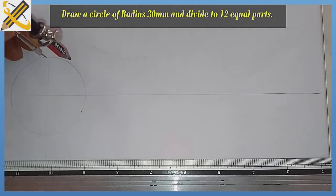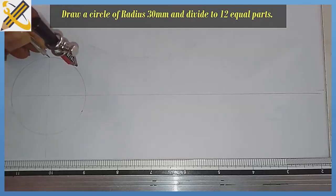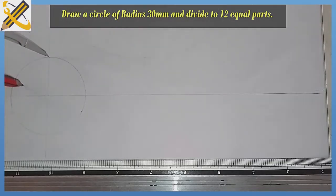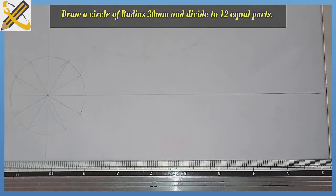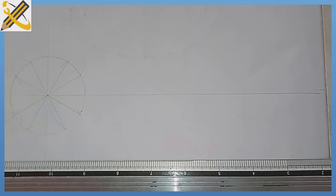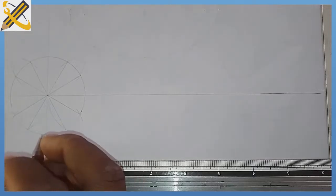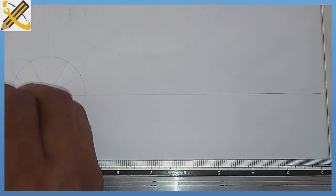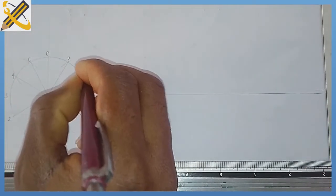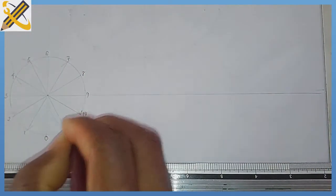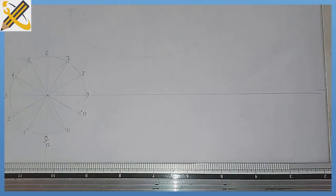After doing that, we divide this circle into 12 equal parts. If you don't know how to divide a circle into 12 equal parts, check our YouTube page — we have a tutorial video on that. After dividing your circle into 12 equal parts, you do the numbering: 0, 1, 2, 3, 4, 5, 6, 7, 8, 9, 10, 11, then 0 over 12.